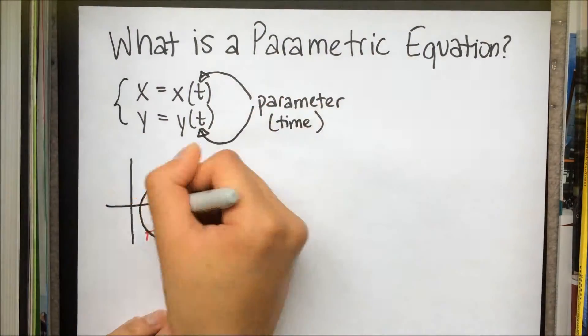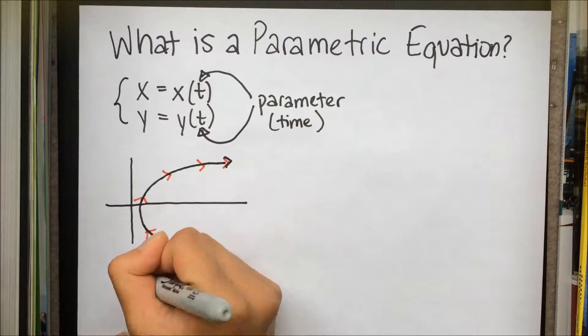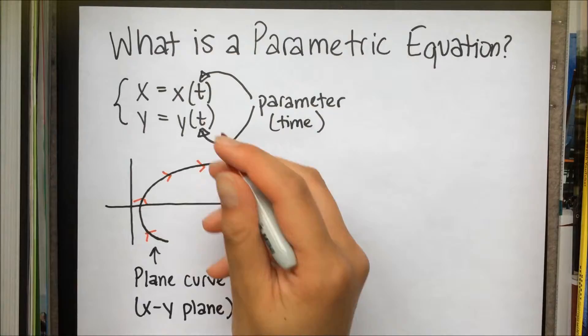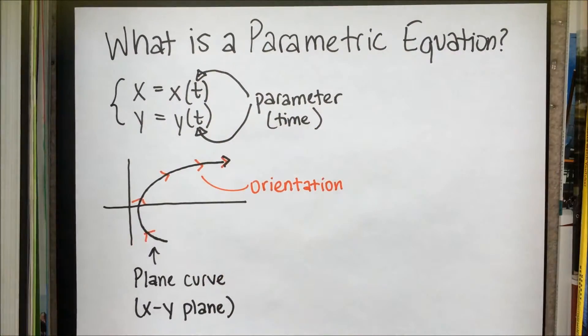This graph is a plane curve. This is because the graph lies on the xy plane. The arrows drawn in this curve indicate the orientation, which is the direction of the curve as the value of t increases.